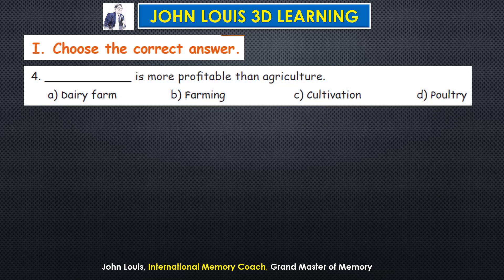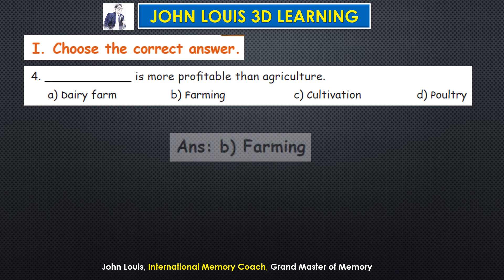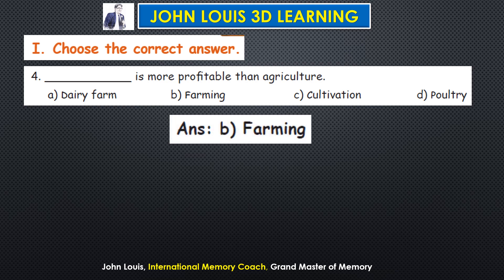Fourth question: dash is more profitable than agriculture. Options are dairy farm, farming, cultivation, and poultry. Farming is more profitable than agriculture. The answer is B — farming.